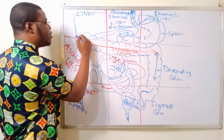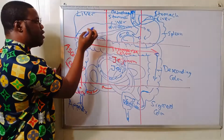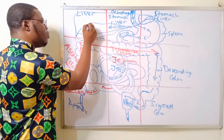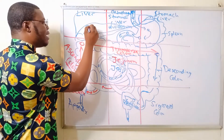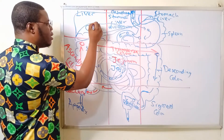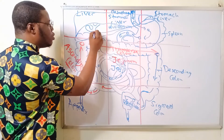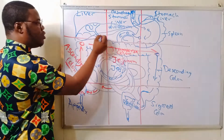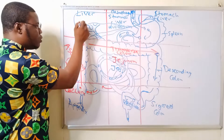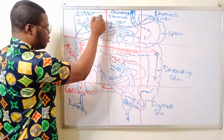If you look at the posterior part of the liver, you will find the gallbladder there. The gallbladder is connected through ducts, which we will discuss further when we cover the biliary tract.